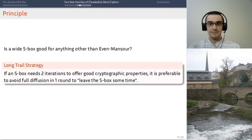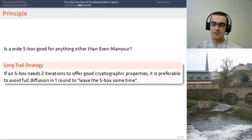Well, yes, you can. That's what we call the long-trail strategy. So, that's something we introduced when we designed SPARKLE in 2016, if I remember correctly. And the long-trail strategy is a design strategy which allows you to leverage wider s-boxes. So, if you have an s-box which needs several iterations to offer good cryptographic properties like ALZET does, then it's better to avoid full diffusion in one round.